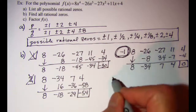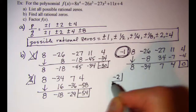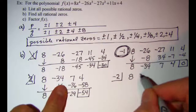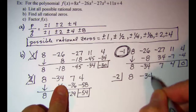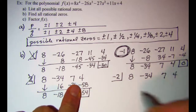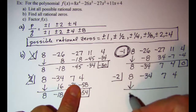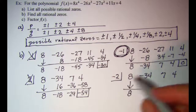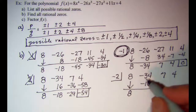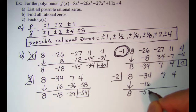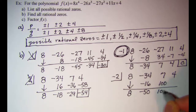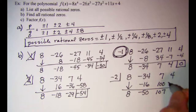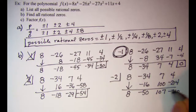Let's try k = -2 with coefficients 8, -34, 7, and 4. Bringing down the 8, then -16 gives -50, then 100 — that's not going to work — giving -214 and then a remainder of -210. So -2 is not a zero.